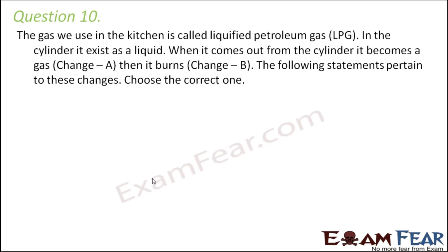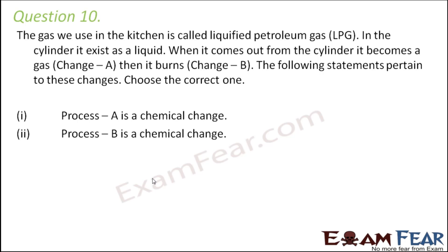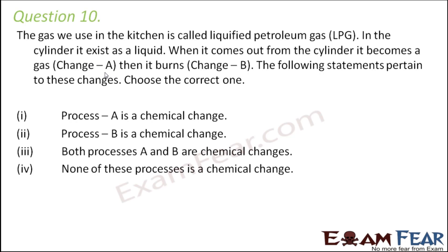Question number ten: the gas we use in the kitchen is called liquefied petroleum gas (LPG). In the cylinder it exists as a liquid; when it comes out it becomes a gas, then it burns. Change A refers to the liquid LPG converting into gaseous form — the composition of LPG remains the same, only the state changes from liquid to gas, so change A is a physical change. Change B is the burning — heat and light are released and new substances are formed, so burning is a chemical change. Therefore, process A is physical and process B is chemical.